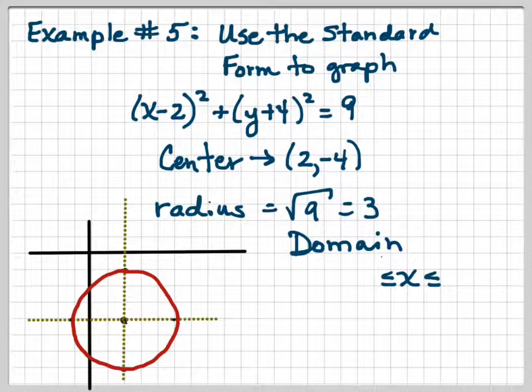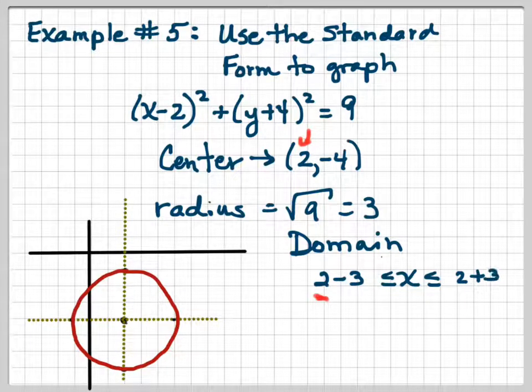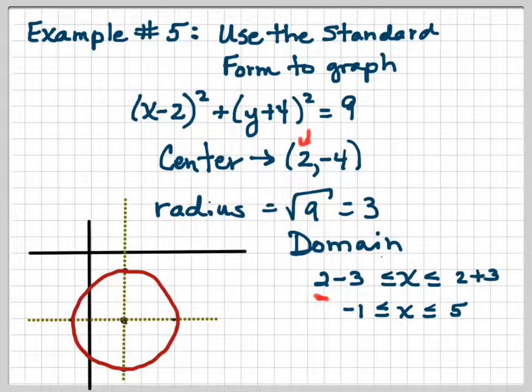Now I also want to be able to identify the domain and range. When I'm looking at a graph that's been graphed accurately, it's pretty easy just to count back and forth to get what the domain and range is. But you can also do it by taking, let's say for the domain, we know that the x coordinate is 2. So if we start off with 2 and we take away the radius and then we, on the other side, we add the radius. So start with the coordinate and take away the radius on the left side and add the radius on the right side. So that's going to give us, the domain is from negative 1 to 5, and you can see that by looking at your graph here.